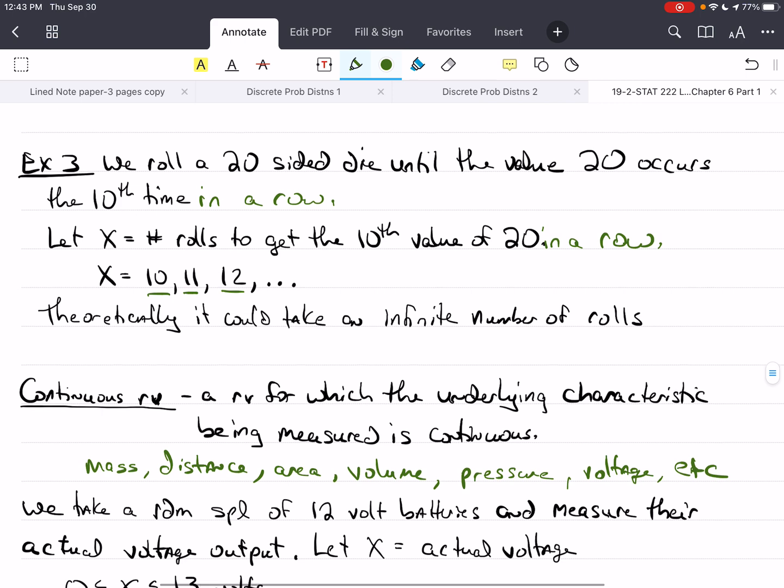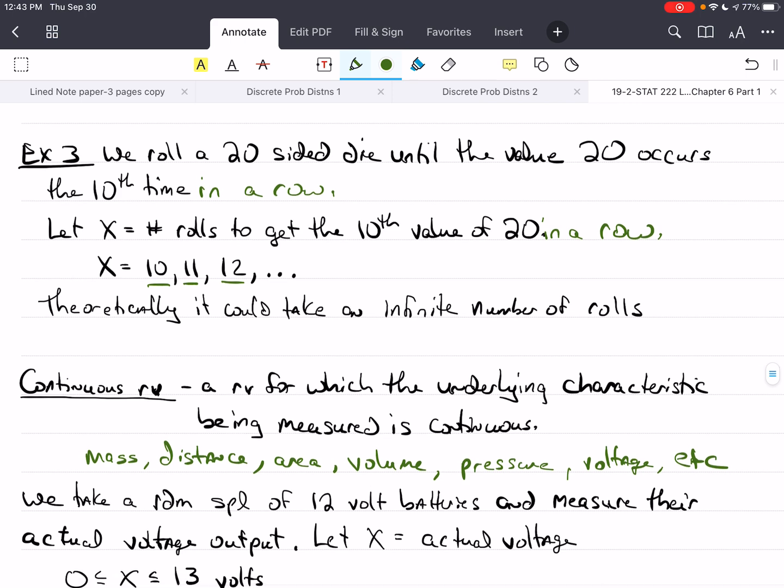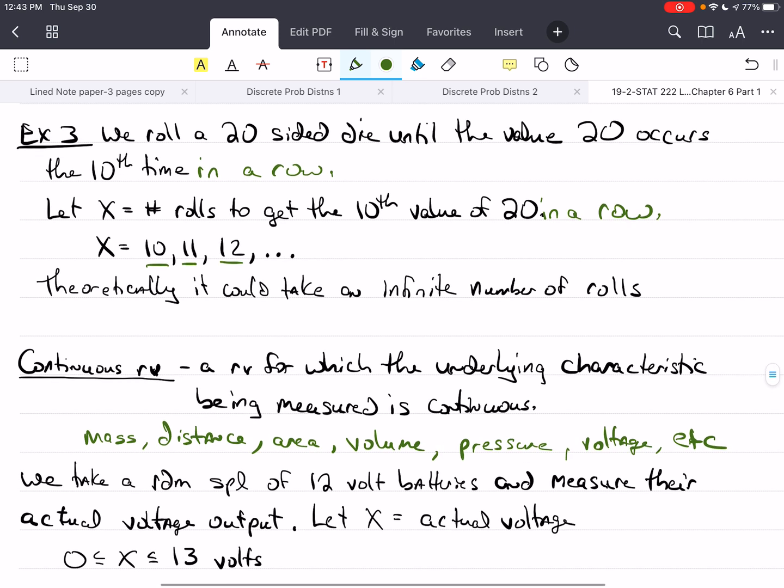Let's take an example where we take a random sample of 12 volt batteries. They're supposed to be 12 volt and we measure their actual voltage. I didn't say these are new. We're going to let the random variable X be equal to the actual voltage. To be safe, if they're completely depleted, then they'll have zero volts, and they're going to be targeting 12. I doubt we're going to find any that are greater than 13 volts. So let's say that X can take a value anywhere between 0 and 13. Our voltage meter might only be able to measure to three decimal places or two decimal places, but voltage is continuous. It can be any value.